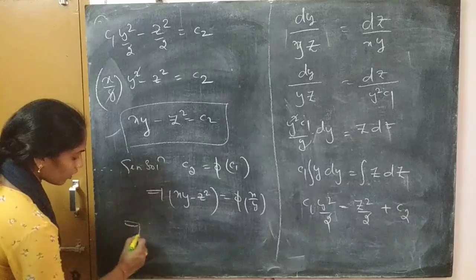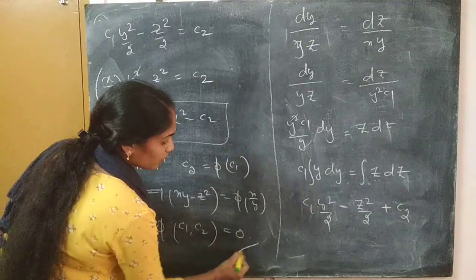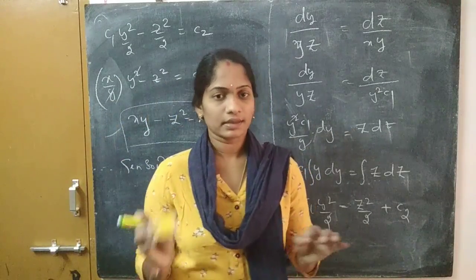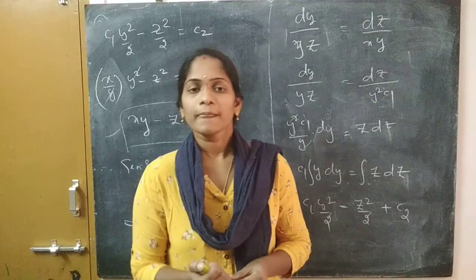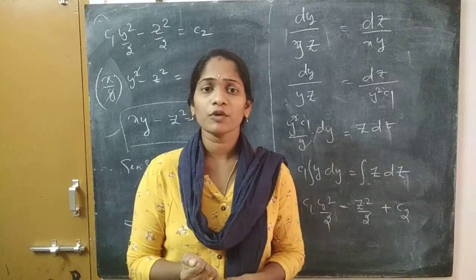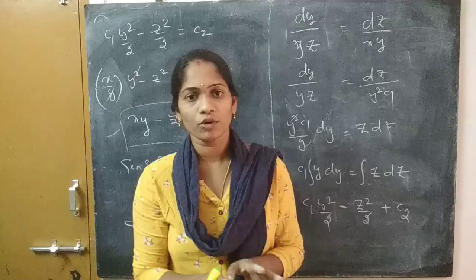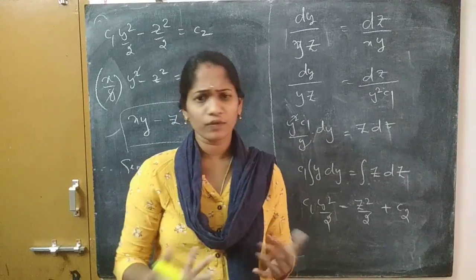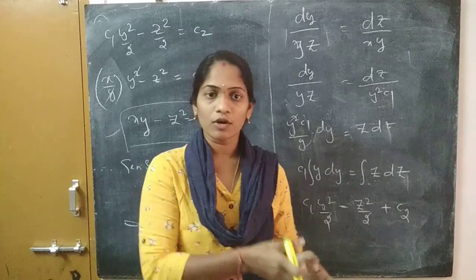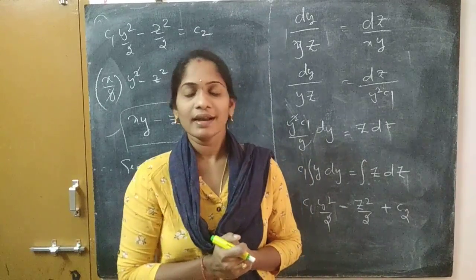You can also write the general solution as phi(c1, c2) equals 0. These are the three problems on Type 2. I want to clarify that in Lagrange's method, Type 1 and Type 2 is just my classification for clarity. This is considered the method of grouping. In the next video lecture, I will explain what Type 1 and Type 2 belong to, what is the method of grouping, and what is the method of multipliers. Thank you for watching.